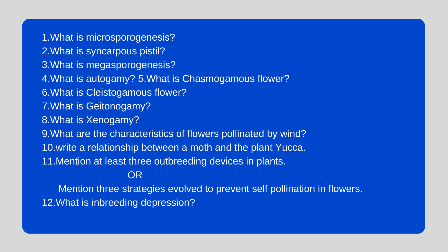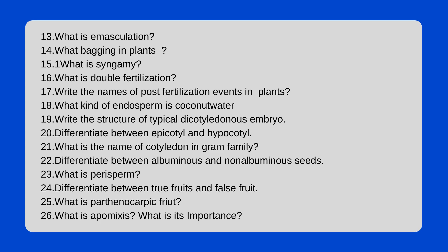Mention at least three outbreeding devices in plants, or mention the three strategies involved to prevent self-pollination in flowers. What is inbreeding depression? What is emasculation? What is bagging in plants? What is in-gamy? What is double fertilization? Write the names of the post-fertilization events in plants. What kind of endosperm is coconut water?